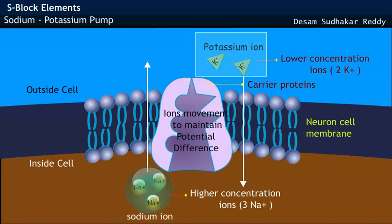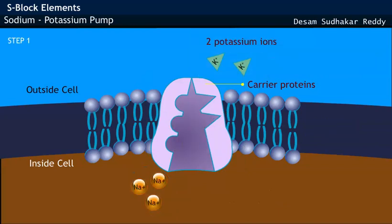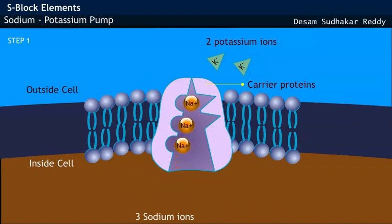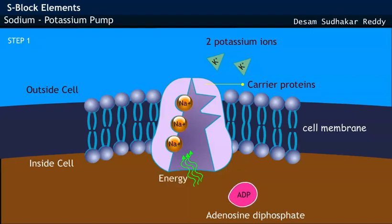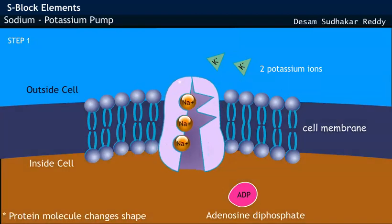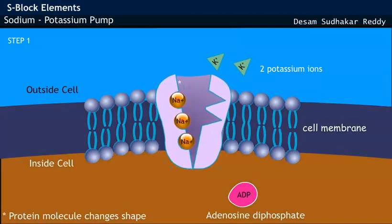In the first step, three sodium ions bind to the sites of protein molecules present on the cell membrane. Now ATP, adenosine triphosphate, is converted into ADP by liberating energy. By using this energy, the protein molecule with sodium ions changes its shape and releases three sodium ions outside the cell.